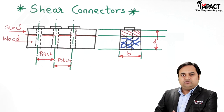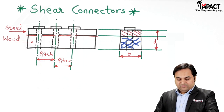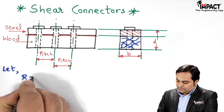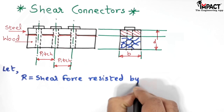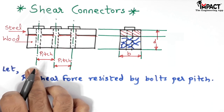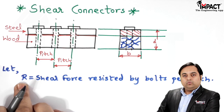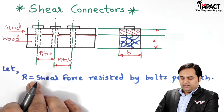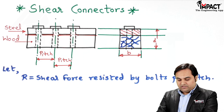Let capital R be the shear force resisted by the bolts per pitch — meaning in one single pitch, the amount of shear force resisted is denoted by R. The shearing area is the pitch multiplied by the width B, because that will be the area over which shearing takes place at the junction.